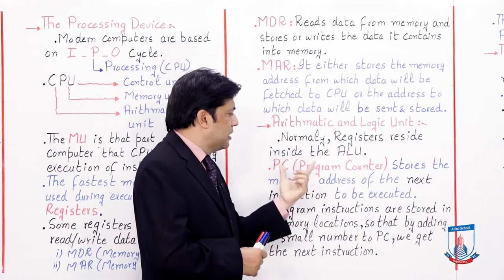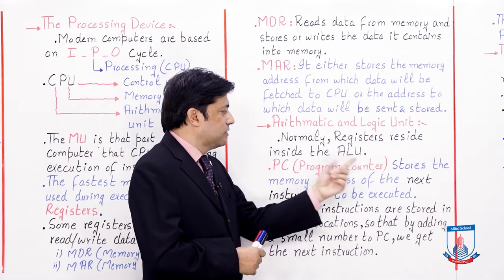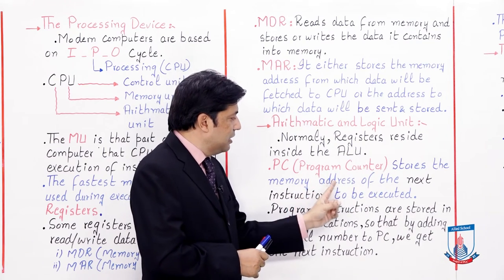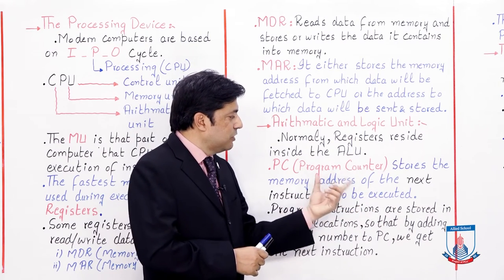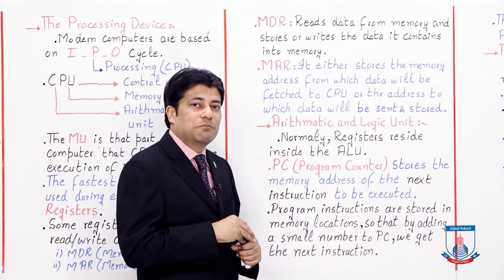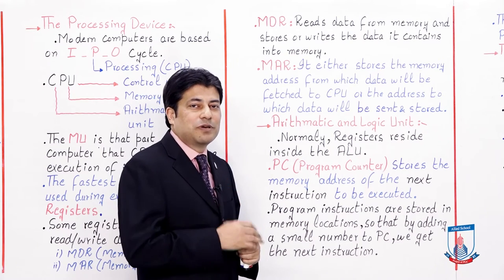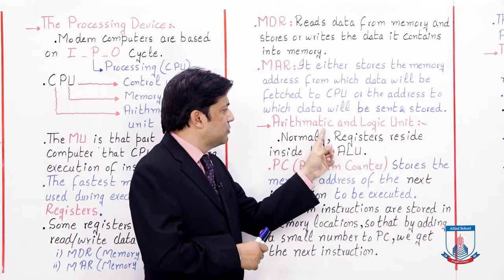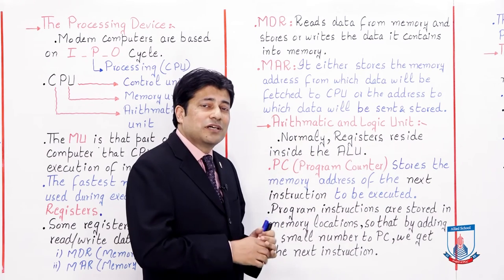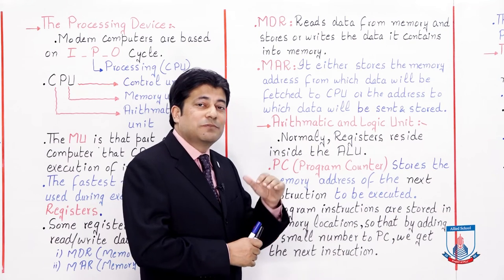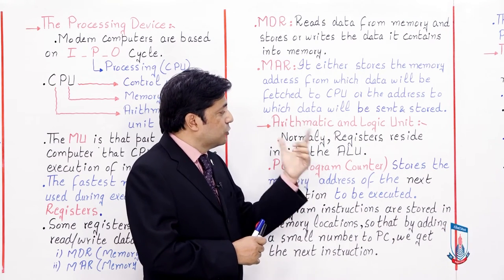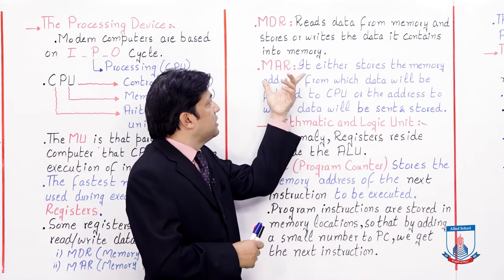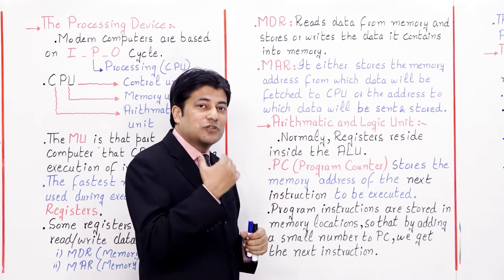Now let's talk about another register — the Program Counter, referred to as PC. The name 'counter' suggests that values are increasing. The Program Counter stores the memory address of the next instruction to be executed. The goal of the computer is to provide fast processing. If you open any application, you want the result immediately.